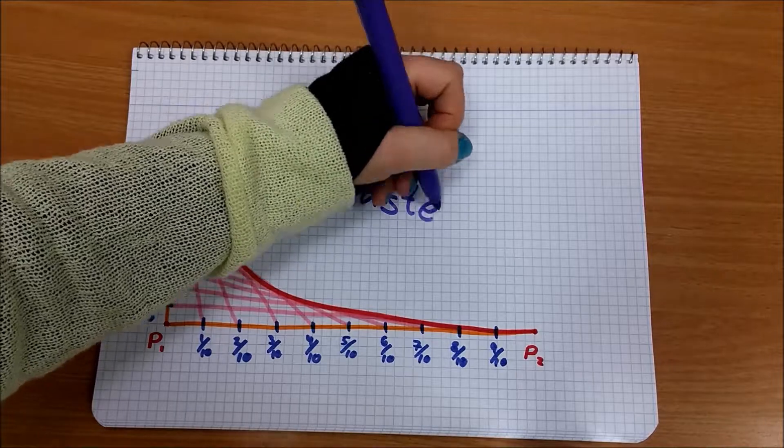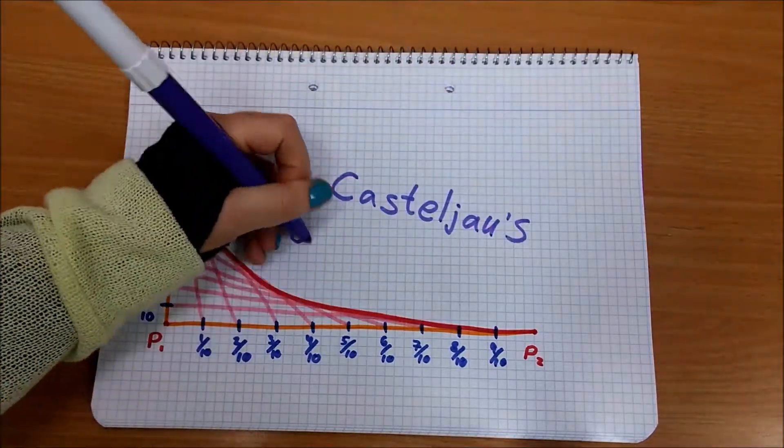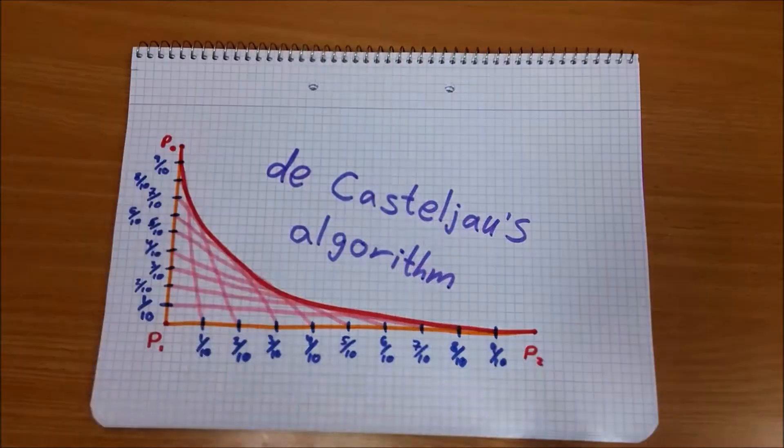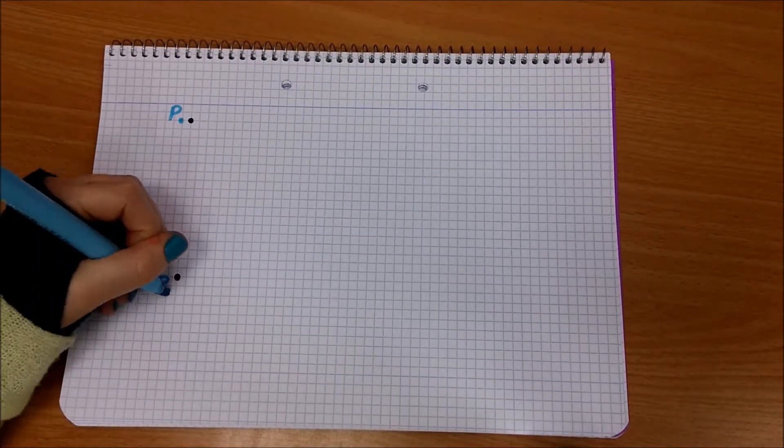It's the Casteljo algorithm for drawing Bezier curves. Connecting an infinite number of pairs of points might be hard.